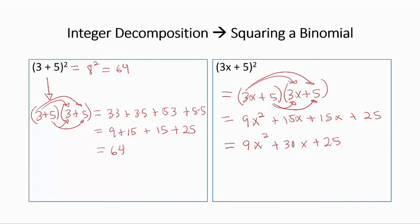Some people ask why I don't just teach the FOIL method — first, outside, inside, last. Because that only works for one particular case: multiplying binomials. You have to memorize it, you're not understanding much, and worst of all, you cannot extend it to multiplication of other polynomials. Through integer decomposition, you see a construction you already understand — addition and subtraction of integers. Thank you.